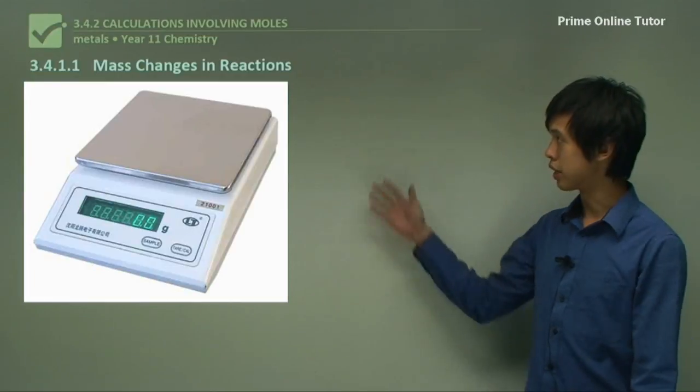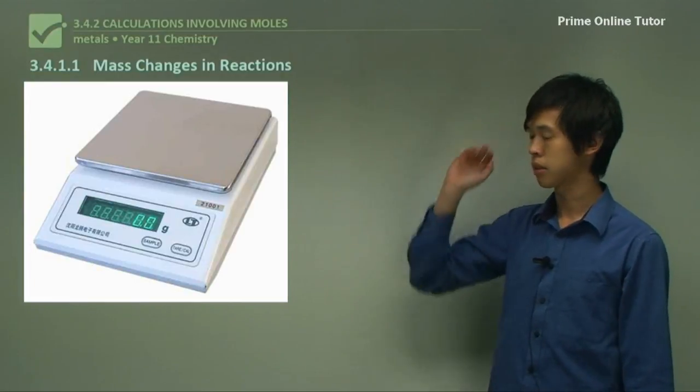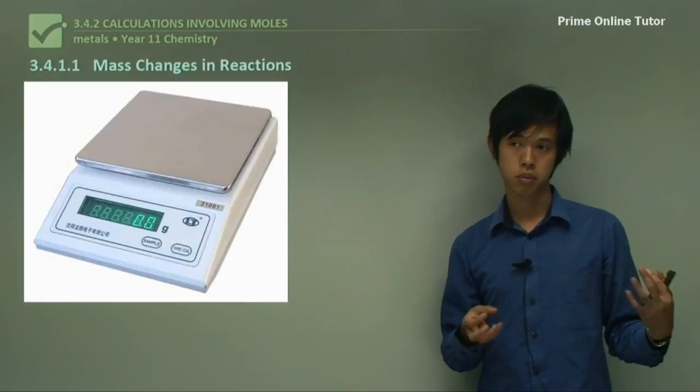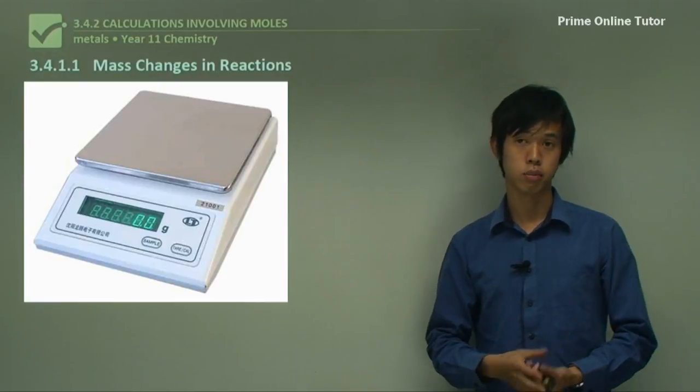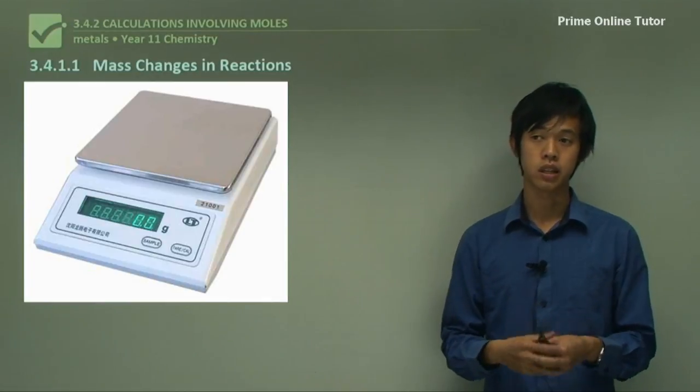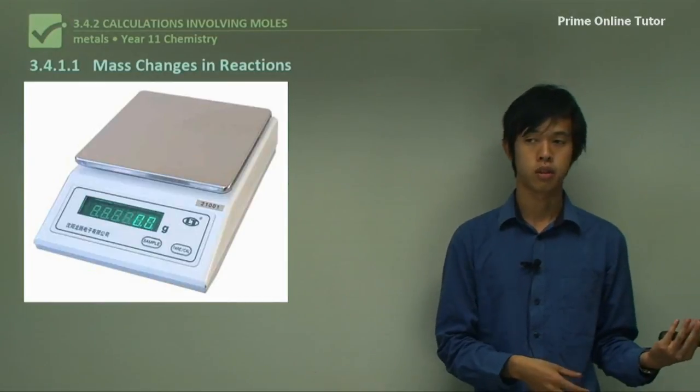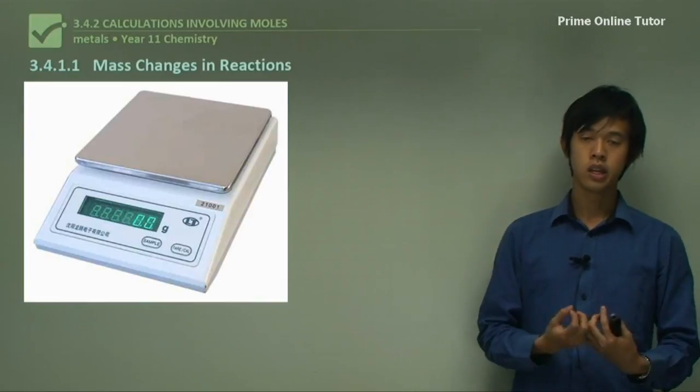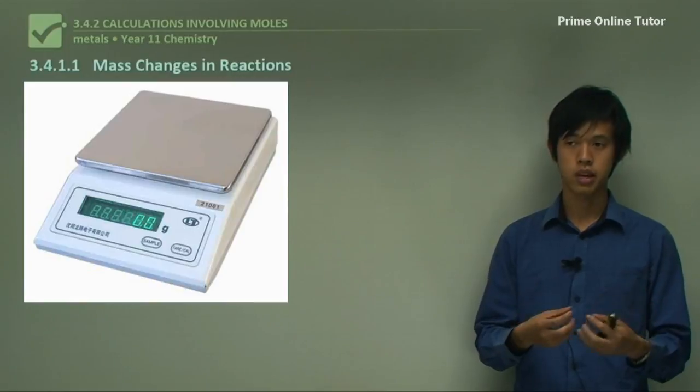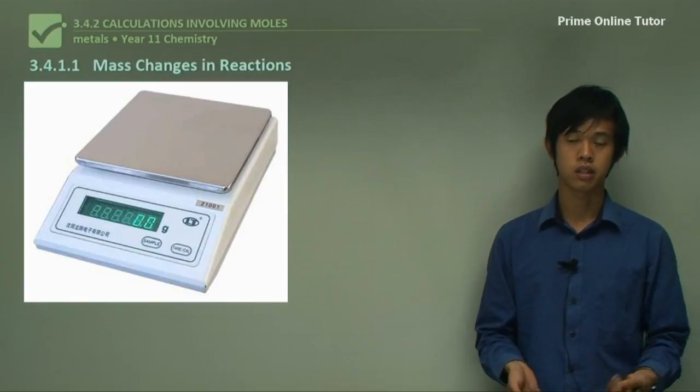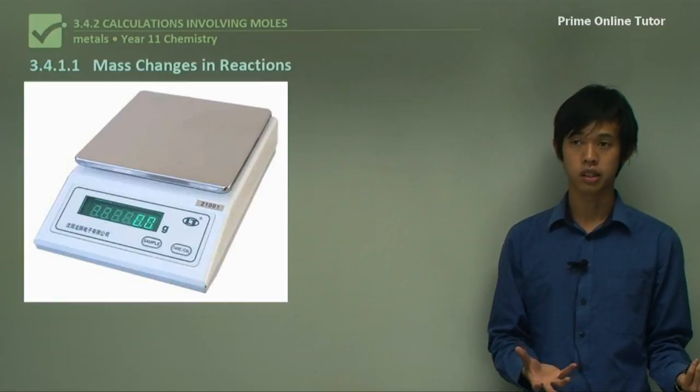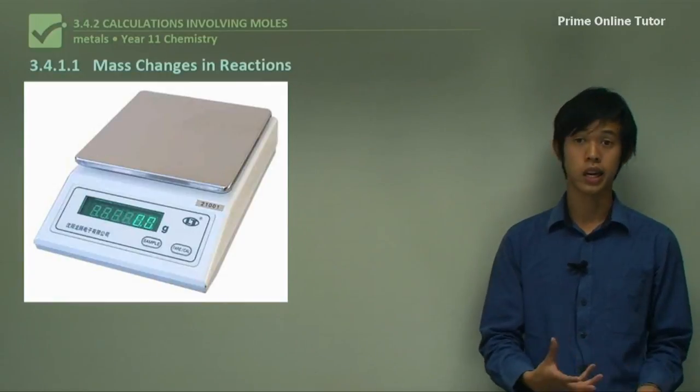So in today's lesson, we're going to look at mass changes in reactions. So when, for instance, a metal and a gas react together and form a single solid, that single solid will have a mass greater than the solid that we started with. That's because it's taken in the gas and added that to its mass. So obviously, the mass of the product will be bigger than the mass of the solid reactant. And we're going to look at how that actually happens and how we calculate these things.